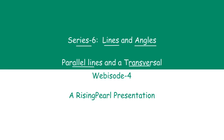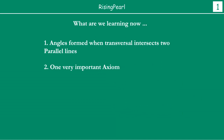We have seen our last webisode, webisode 3, which we talked about — a pair of lines and transversals. But today we are going to talk about specifically if we have two parallel lines and a transversal, then we will see a few things. So I am thinking about the angles formed when a transversal intersects two parallel lines.